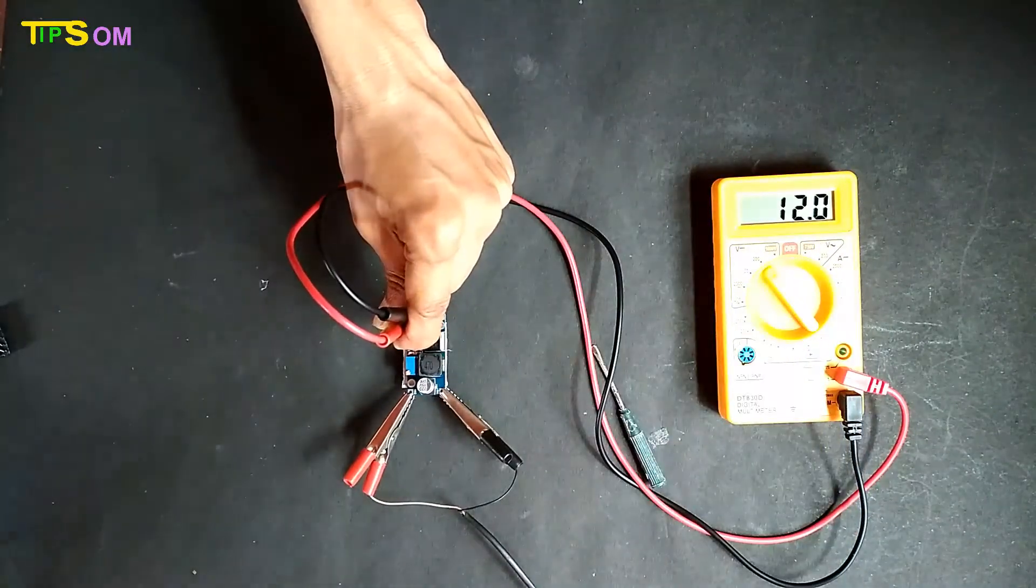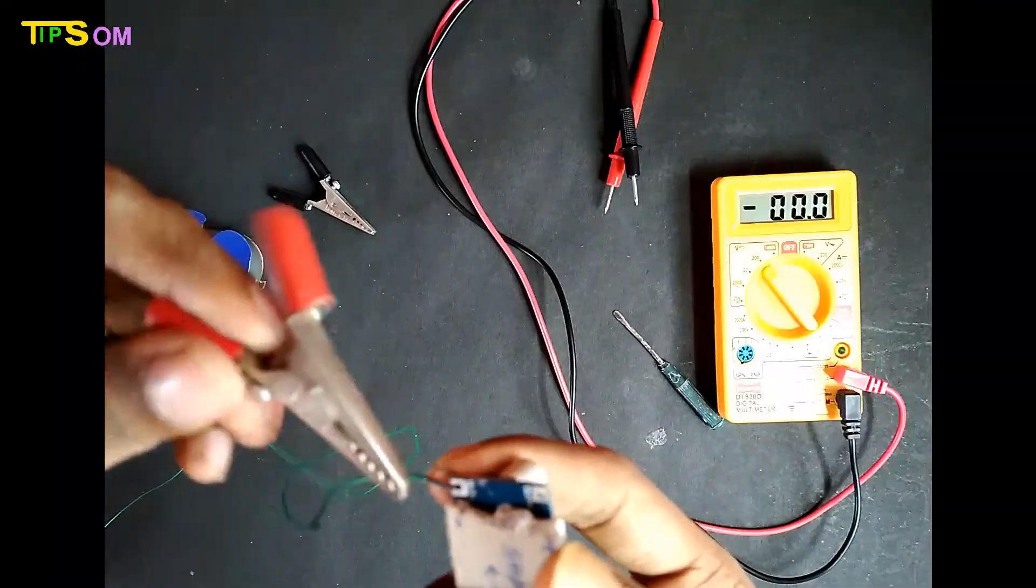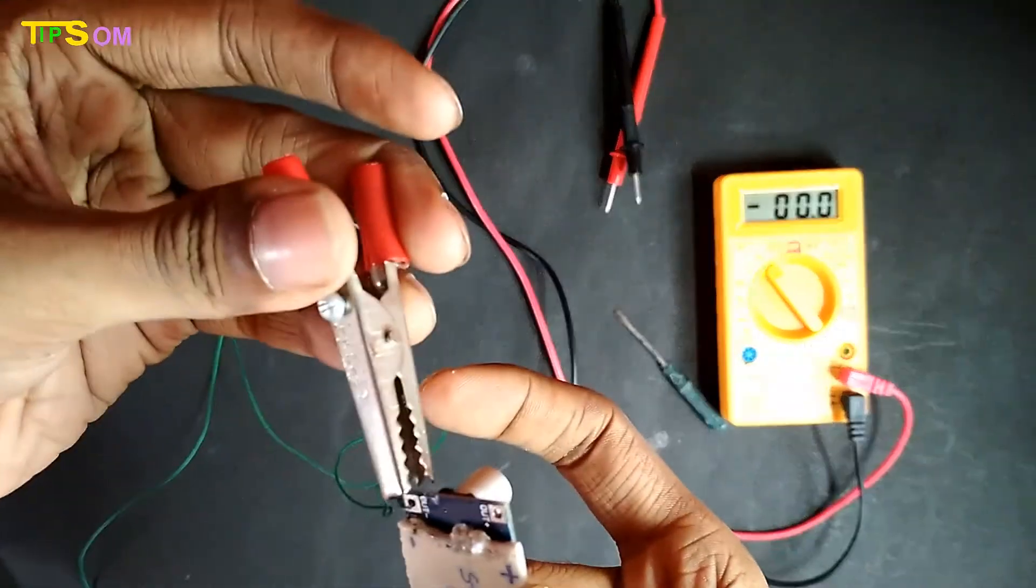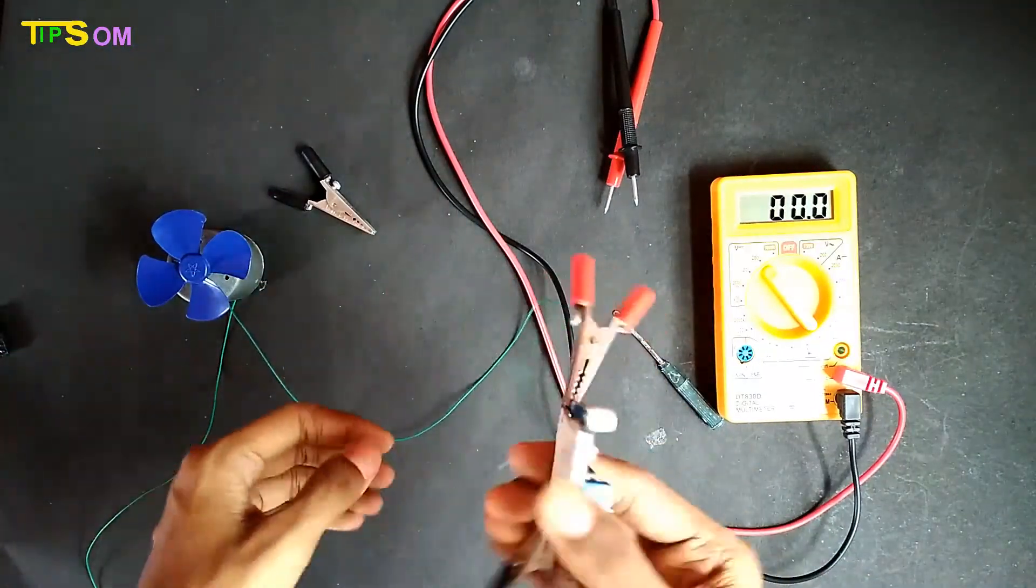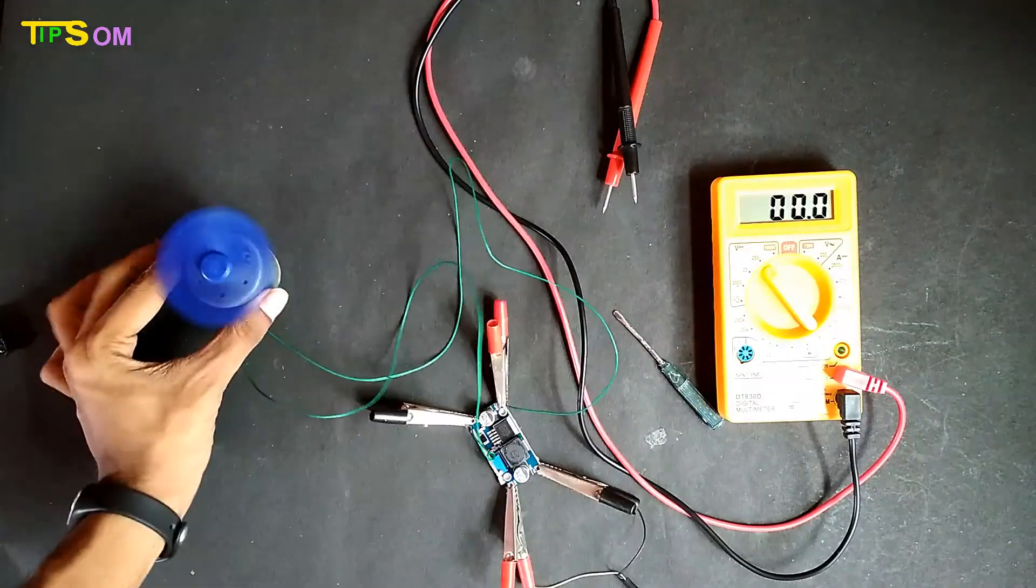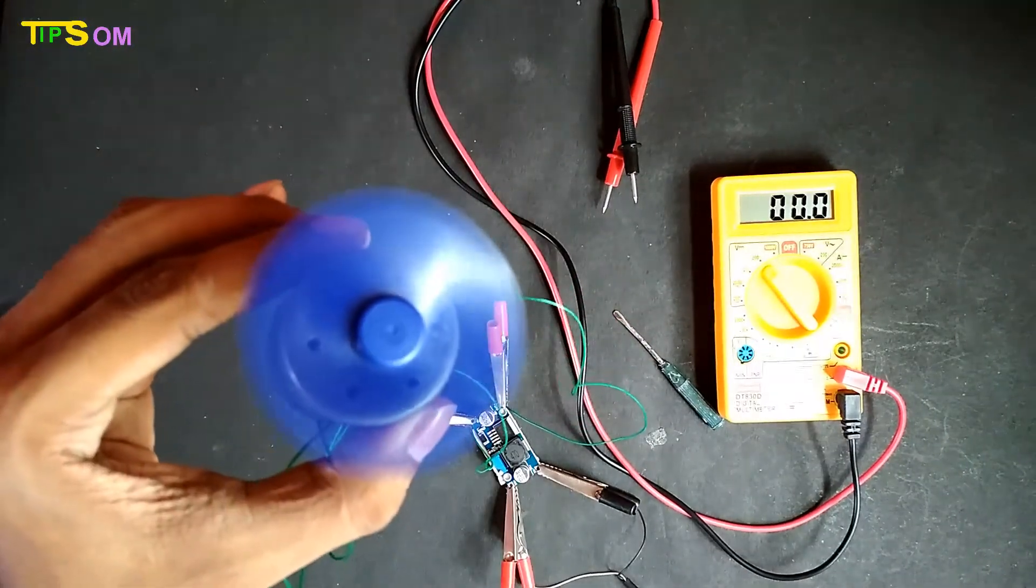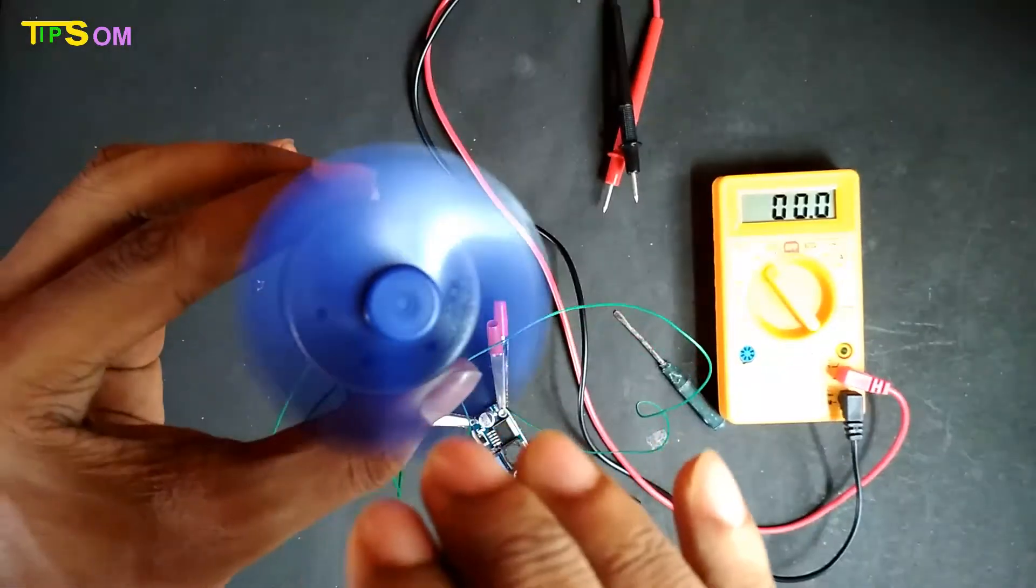Now I am going to attach a 12 volt DC motor to the output side. Let's see if it will run or not. Here it is, it is running and the voltage is very good.